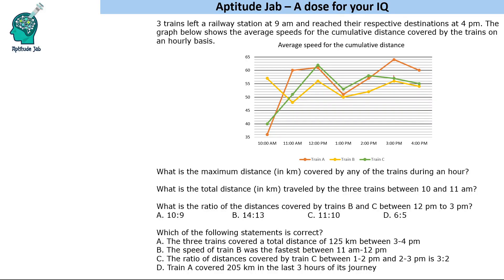So how to read this graph? Let's say train B - the speed till 1 PM is 50. So from 9 AM to 1 PM there are 4 hours, and the speed is 50, so distance will be 50 into 4, which is 200 kilometers.